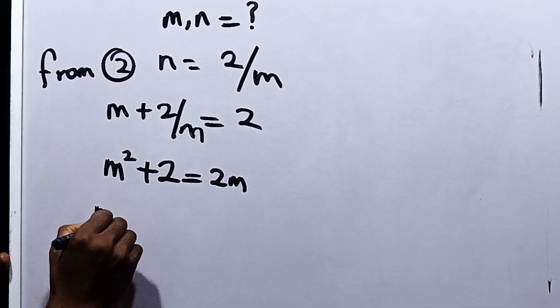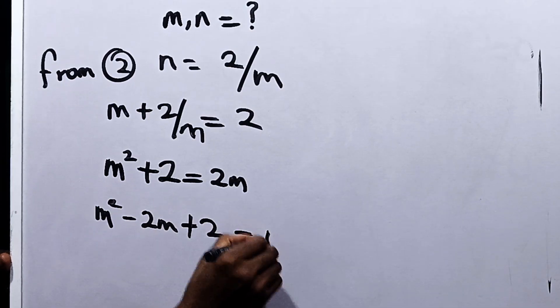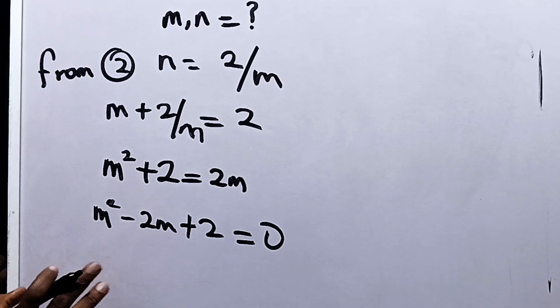From here, we now have that m squared minus 2m plus 2 is equal to 0. This cannot be solved with the normal factoring equation. We have to use the quadratic formula to solve it.